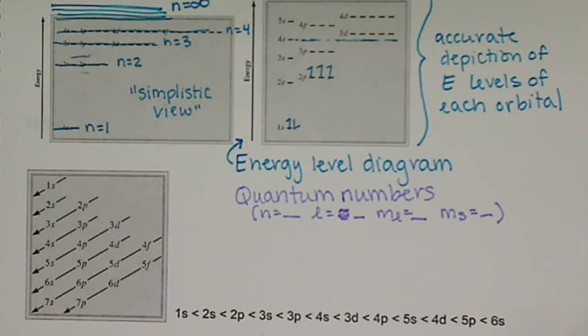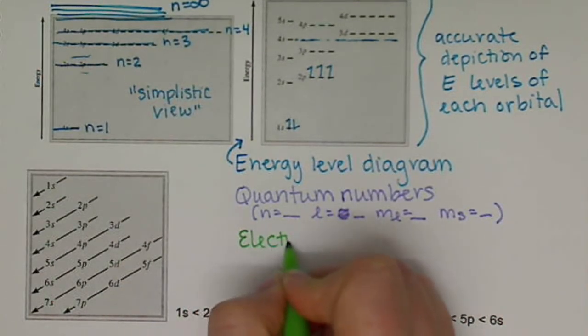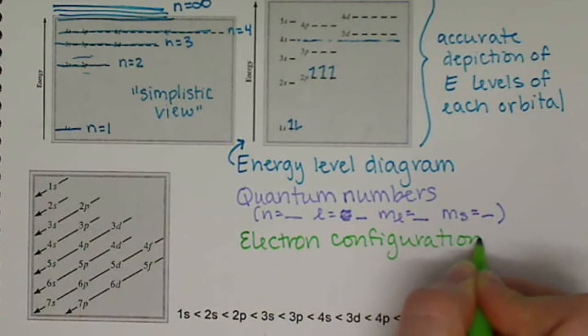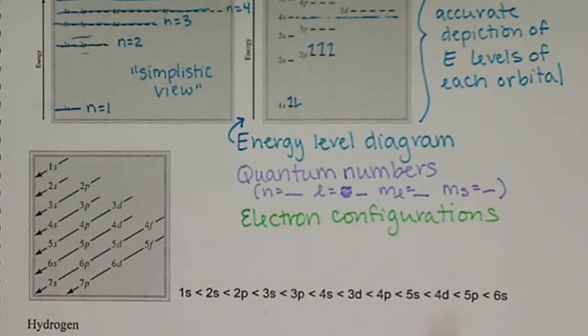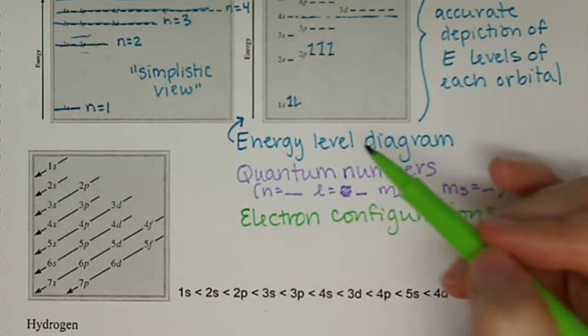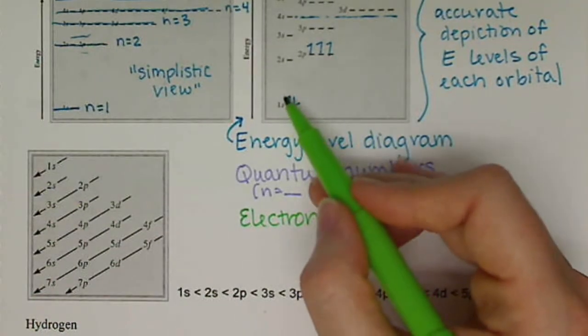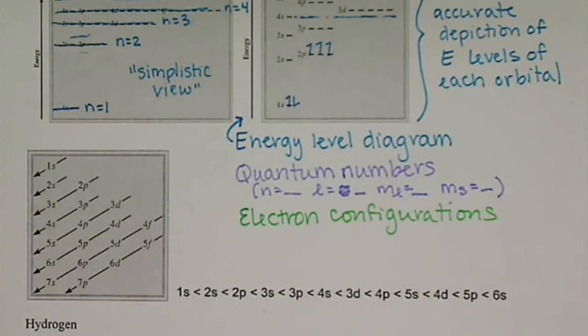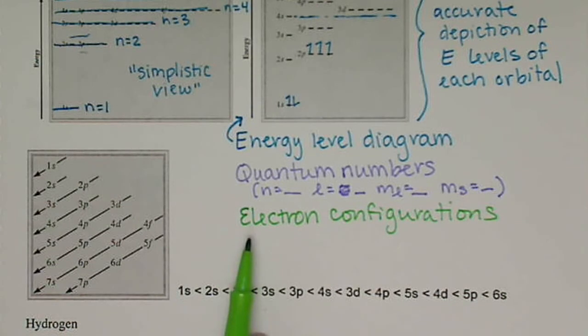We have a third way of representing our electrons, and these are called electron configurations. And electron configurations list our electrons and the orbitals that they're located in, just like our energy level diagrams. But it does it in a very condensed way, so we don't have to worry about this spin up and spin down nonsense. We don't have to worry about our axes.